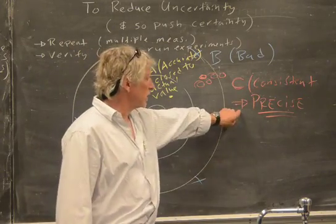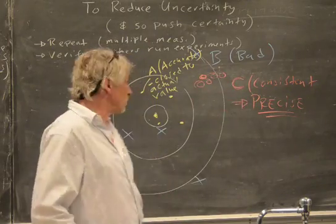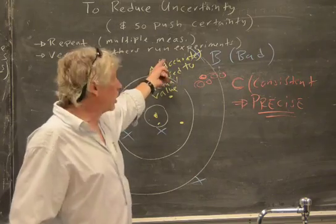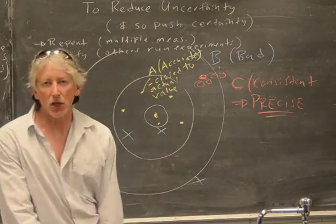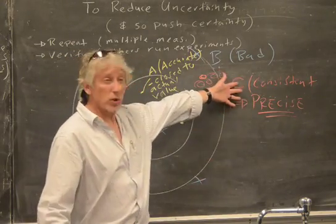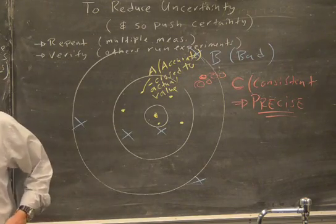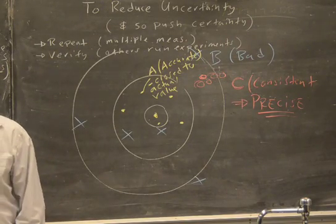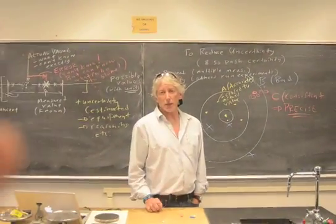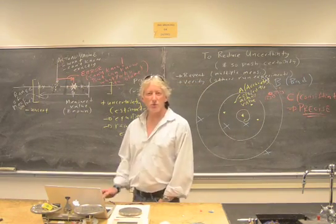So: precision is how close the values are to each other — smaller range. Accuracy, you can't really know, but in principle it's how close your result is to the actual value. Precision is what you can know and measure. We'll talk about other ways of estimating that next time, and ways of writing that down. On to measurement and uncertainty, video 2.